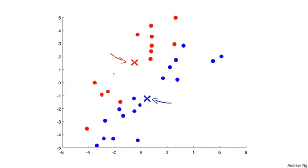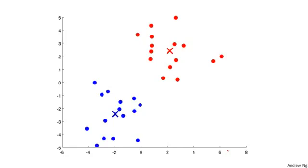Then we go back to another cluster assignment step. We again look at all of the unlabeled examples and, depending on whether each is closer to the red or the blue cluster centroid, color them either red or blue. Some of the colors of the points change. Then we do another move centroid step, computing the average of all the blue points and all the red points, and moving the cluster centroids accordingly. After a few more iterations of cluster assignment and move centroid, k-means has converged — the cluster centroids will not change any further and the colors of the points will not change any further. At this point, k-means has done a pretty good job finding the two clusters in this data.